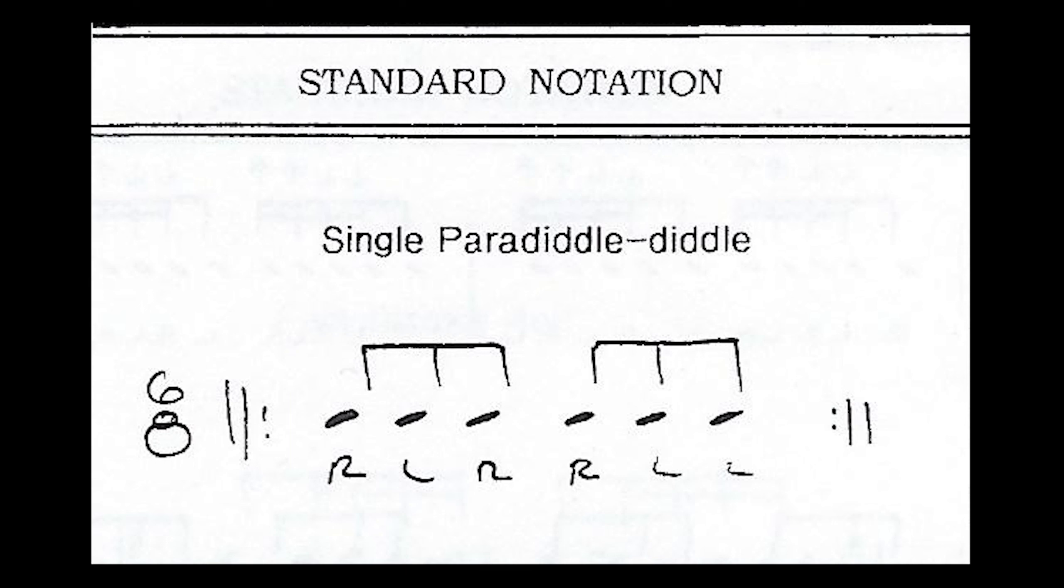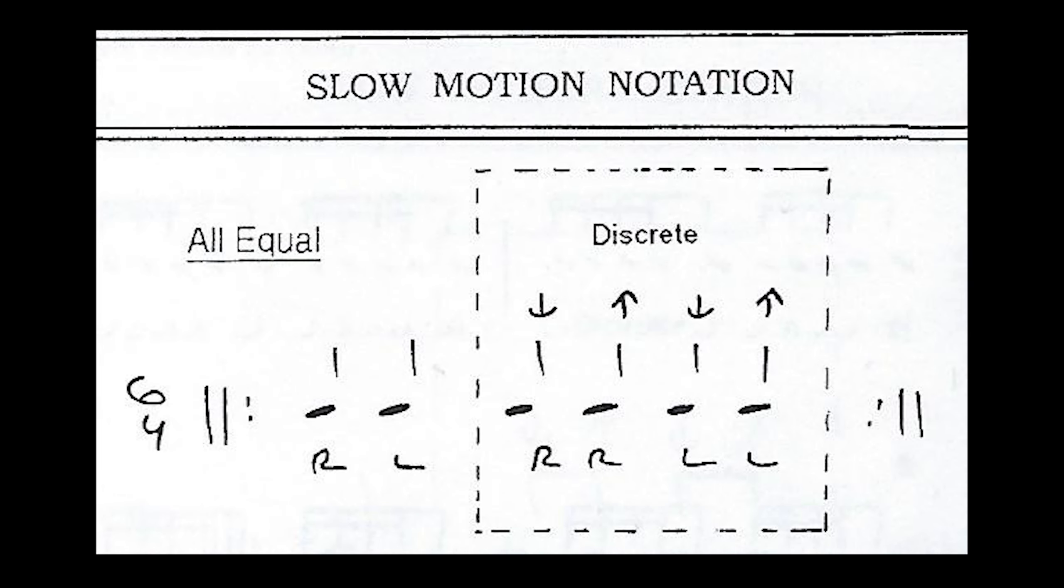Let's start by taking a look at the single paradiddle diddle written in standard notation and compare that with slow motion notation. Notice that the standard notation is written in 6-8 using eighth notes, where the slow motion notation is written in 6-4 using quarter notes.